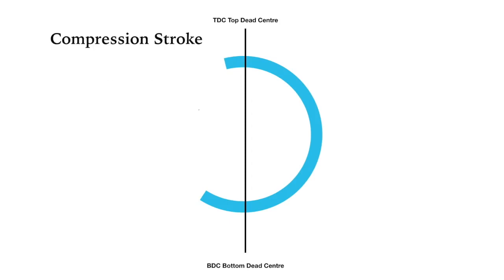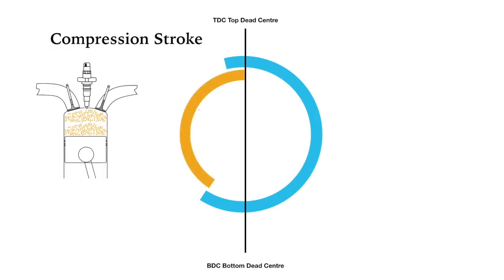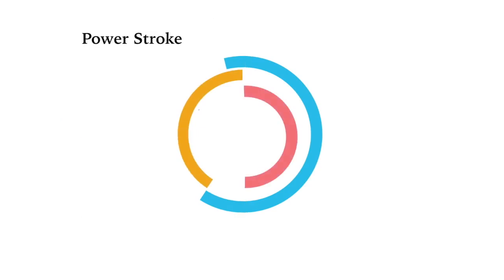Next comes the compression stroke. The piston is moving up. It begins about 25 degrees after bottom dead centre.